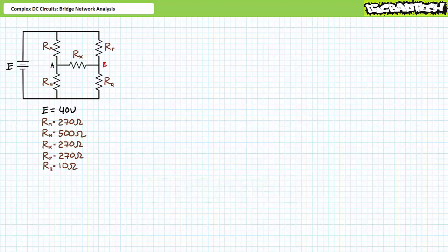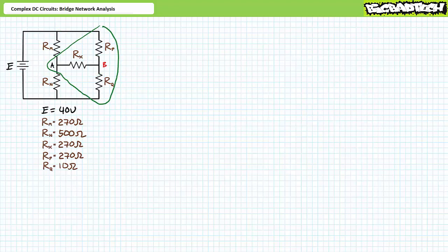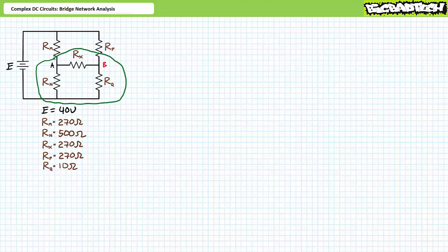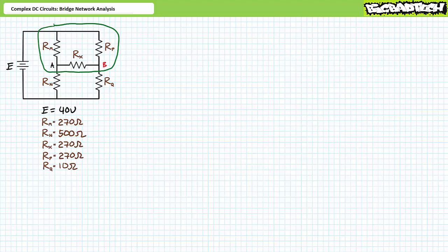There are several places to make use of an equivalency between delta and Y configurations in our bridge network. One could convert the Y configuration of RM, RX, and RN into a delta, or similarly the Y of RP, RQ, and RX — but these Y-to-delta conversions would not result in a simpler circuit. Instead, we can convert the delta configuration of RN, RX, and RQ into a Y, or the delta of RM, RX, and RP into a Y. Either delta-to-Y conversion would result in a simpler series-parallel circuit. Notably, RM, RP, and RX are all 270 ohms — a balanced delta configuration — making the conversion especially straightforward.